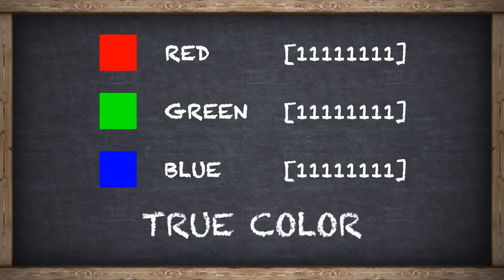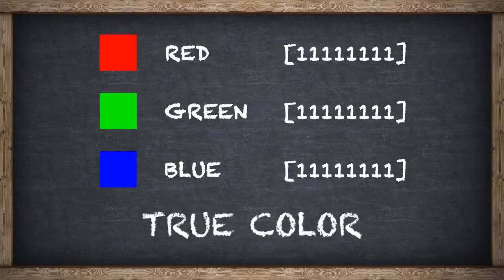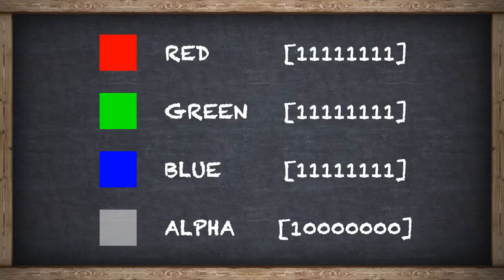If you calculate the total amount of colors you can get from these combinations, it's over 16 million different shades. It's estimated that the human eye can only see somewhere up to 10 million shades. This is why we call it true color. It simulates real life fairly well. If you've ever messed around with color settings, you might notice that colors are actually 32 bits and not 24. This is because there is actually one more channel. This channel is known as alpha.